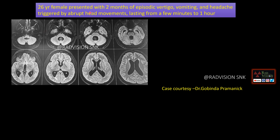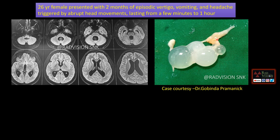Next case: a 26-year-old female presented with two months of episodes of vertigo, vomiting, and headache triggered by abrupt head movements. You can see there is a bubbly cystic lesion noted within the fourth ventricle projecting into its lumen, with supratentorial dilatation of bilateral lateral ventricles and even the third ventricle, consistent with hydrocephalus. These cystic bubbly lesions within the fourth ventricle causing obstructive hydrocephalus in a female with this typical history definitely suggest cysticercosis, which is the most common differential. After surgical treatment, these white bubbly cystic lesions were retrieved from the fourth ventricle.